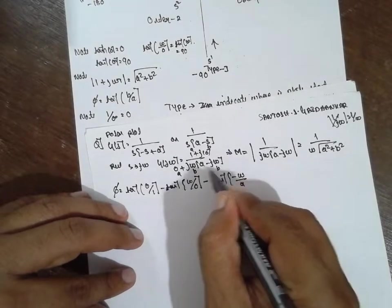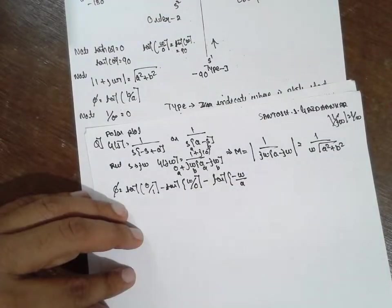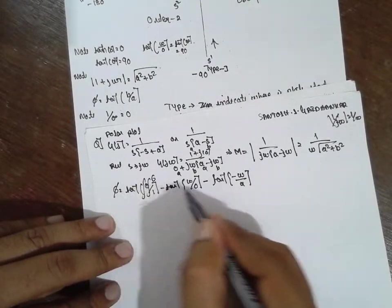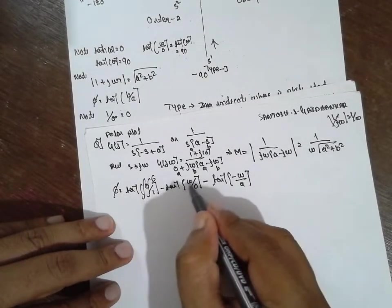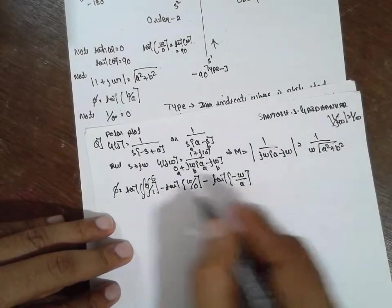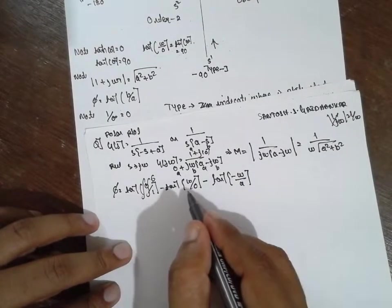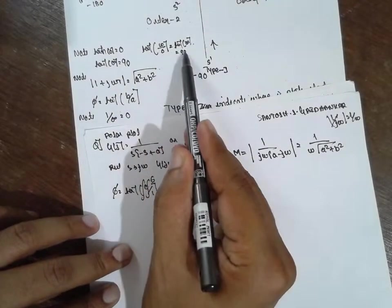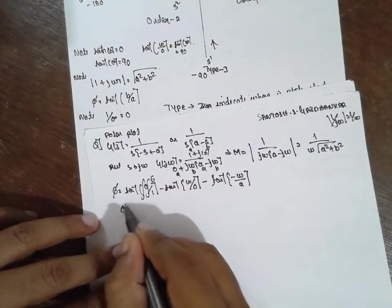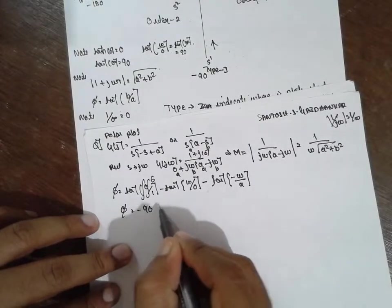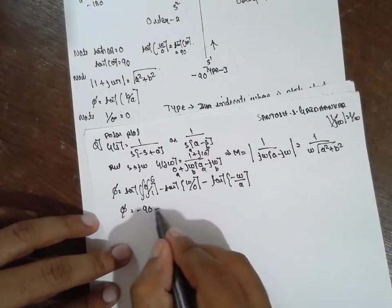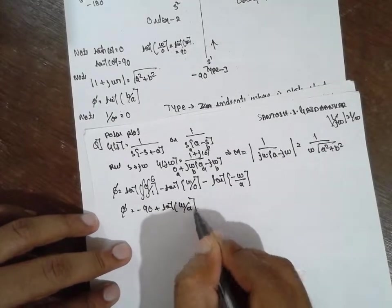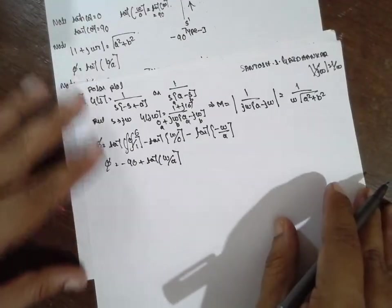Since b/a has a minus sign, and tan inverse(ω/0) is tan inverse(infinity) which equals 90 degrees, φ equals minus 90. Plus tan inverse(ω/a). So the final phase expression is φ = minus 90 plus tan inverse(ω/a).